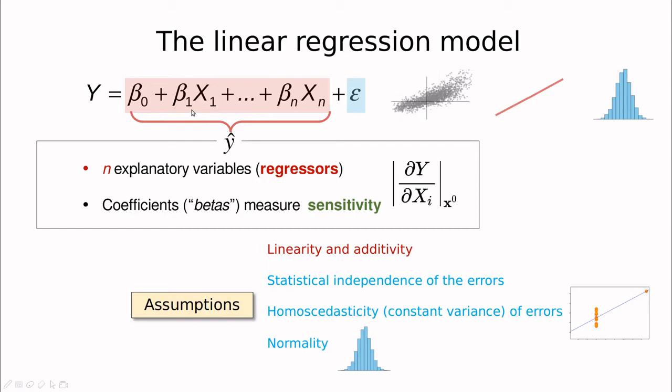So the betas, the weights or coefficients of the regression are directly the sensitivity. So a very low cost way to do sensitivity analysis is simply using linear regression.